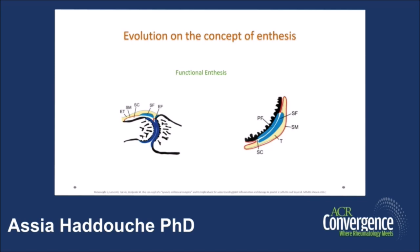Functional enthesis includes sites where the tendon has fibrocartilage that protects it during motion. For example, on the left side of the screen we see the paratendon of the extensor tendon with the fibrocartilage at the level of the MCP joints. On the right part of the screen we see the fibrocartilage in blue of the peroneal tendon, which crosses the lateral malleolus of the leg.